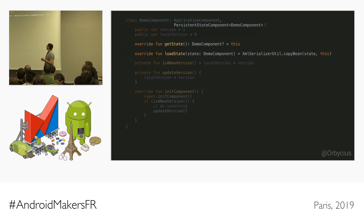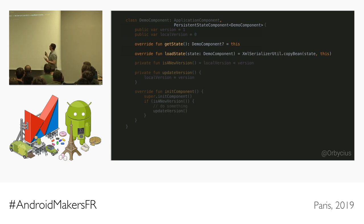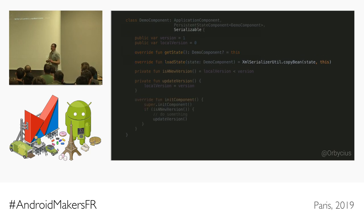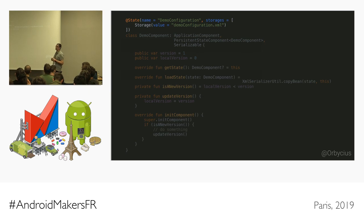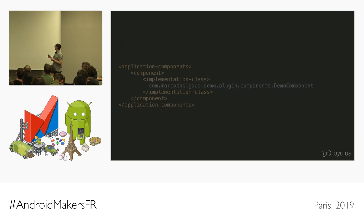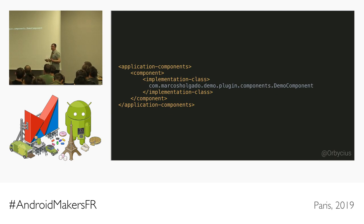To persist state, we implement the PersistentStateComponent interface, which gives us two methods: getState (returns the component) and loadState (saves the component via Java bean serialization, so we also implement Serializable). We declare where to store the data using the @State annotation, which writes everything to an XML file. Finally, as with everything, we declare the component in the plugin.xml file.